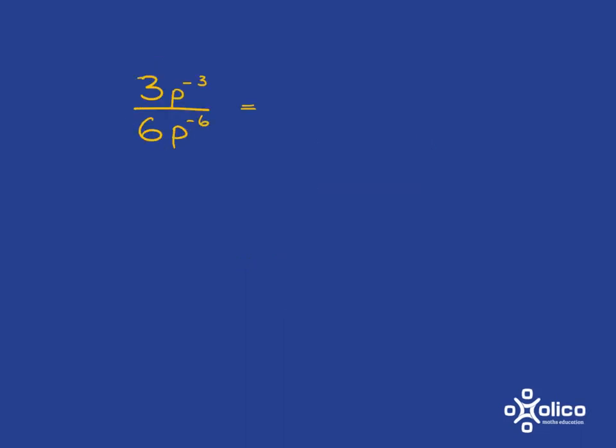How about a revolting one like this one? Well, it's again easy enough. If we look at the numbers, we've got a 3 at the top and a 6 at the bottom. So we can go ahead and do a bit of cancelling there. Divide by 3 gives you 1 and divide by 3 here gives you 2. So what you've got in terms of numbers is 1 over 2.